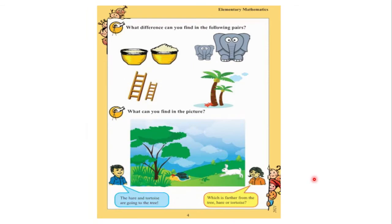Moving to the next page, the author asks: 'What difference can you find in the following pairs?' We can see there is a cup that is not totally full, and another cup that is totally full and overloaded. We can also see there is a small elephant and there is a big elephant.